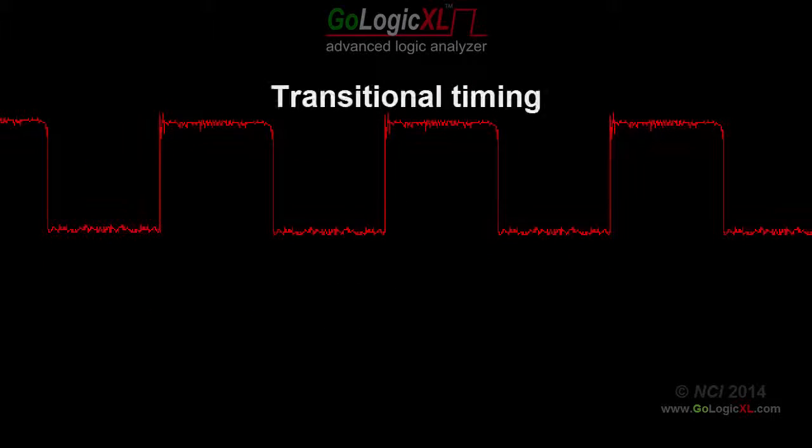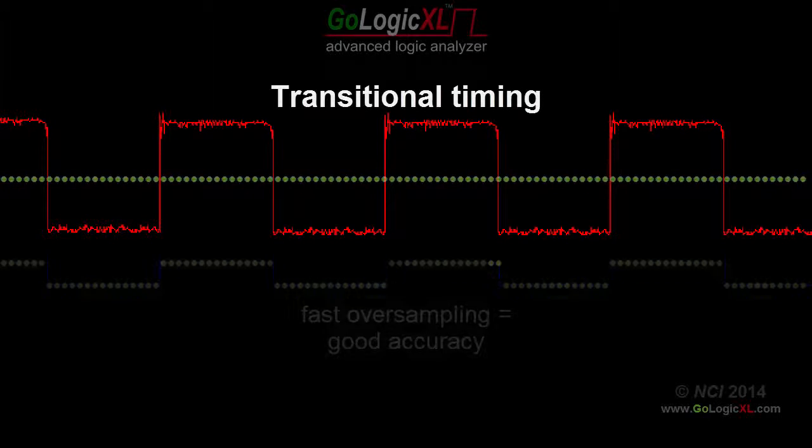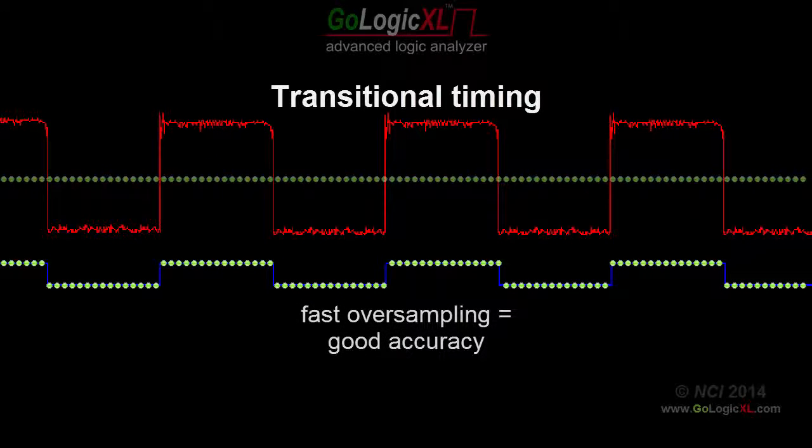When normal timing is active, every incoming sample is stored to memory. A fast oversampling rate provides a very accurate recreation of the original signals, but reduces the total time span of the trace capture.